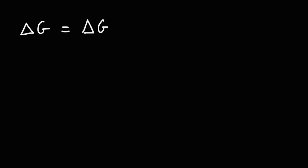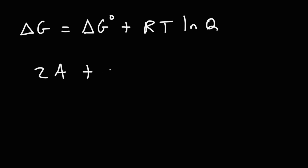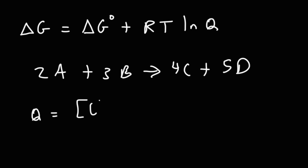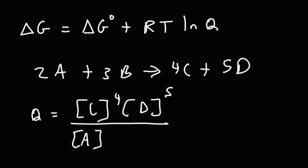If you need to calculate the non-standard delta G value from the standard free energy change value — a circle on top indicates standard free energy change — non-standard delta G is equal to standard delta G plus RT ln Q, where Q is the reaction quotient. For a reaction 2A + 3B turning into 4C + 5D, assuming all species are in the aqueous or gas phase, Q equals C to the fourth power times D to the fifth power, over A squared times B to the third. Just like equilibrium, the reaction quotient equals products over reactants, with coefficients becoming exponents.